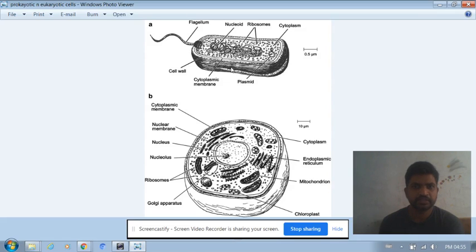is prokaryotic cell, and the second cell which we observe here, the B1, is eukaryotic cell. First of all, let me tell you why we are calling them prokaryotic and eukaryotic. 'Pro' means before, 'karyon' means nucleus.